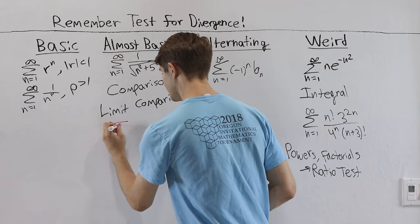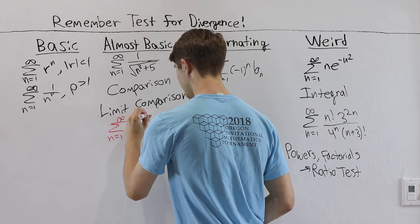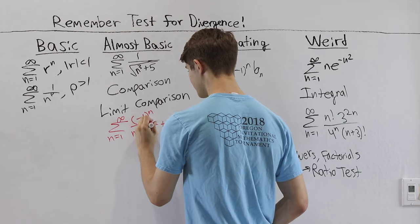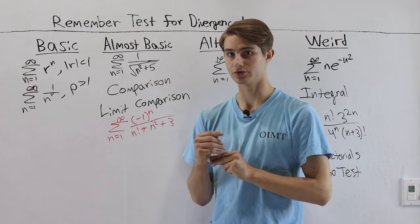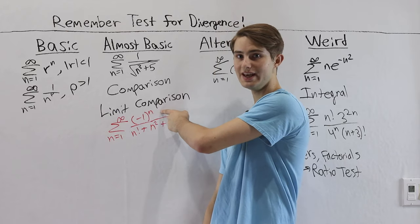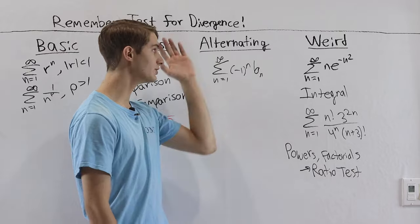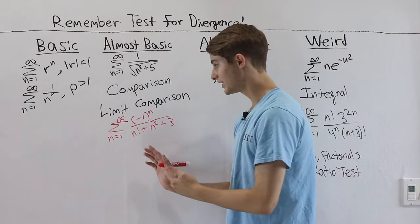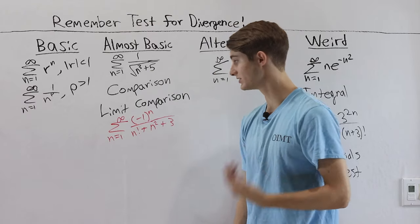Next: the sum from n equals 1 to infinity of negative 1 to the n over n factorial plus n squared plus 3. You might be tempted to use the ratio test because of the factorial, but notice we have a negative 1 to the n in the numerator — this is an alternating series. The first thing we always want to try is the alternating series test, and in this case we can prove the series converges by that test.